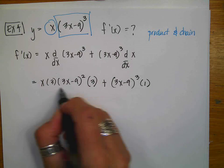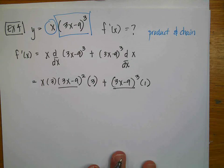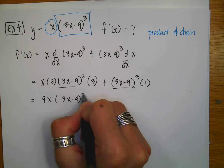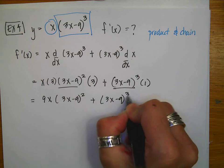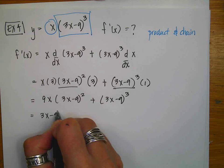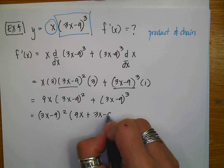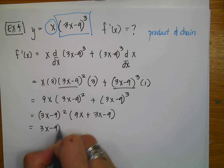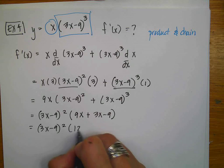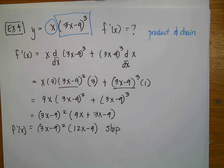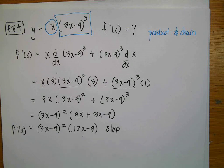Before expanding and distributing, notice that I have two common factors. So I get 9x times 3x minus 9 squared, plus 3x minus 9 cubed. I factor out 3x minus 9 squared, leaving 9x plus 3x minus 9. That gives 3x minus 9 squared times 12x minus 9, and I would stop here. There's absolutely no reason to expand this because it would just get messy.